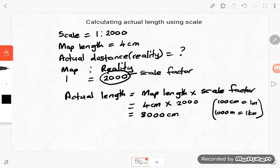So if you want to convert 8000 centimeters to kilometers, first we divide 8000 by 100 to convert the centimeters to meters. We are going to get 80 meters and now we have to convert the meters to kilometers.